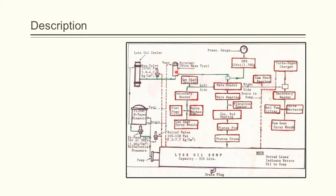From here, the strainer separates the bubbles and impurities in the lubricating oil and sends the lube oil to the main header. From the main header, the lube oil goes to the secondary headers from where it is sent to the cam gears. And from the main header, it goes to the main bearing and connecting rod, piston pin, piston crown, etc.